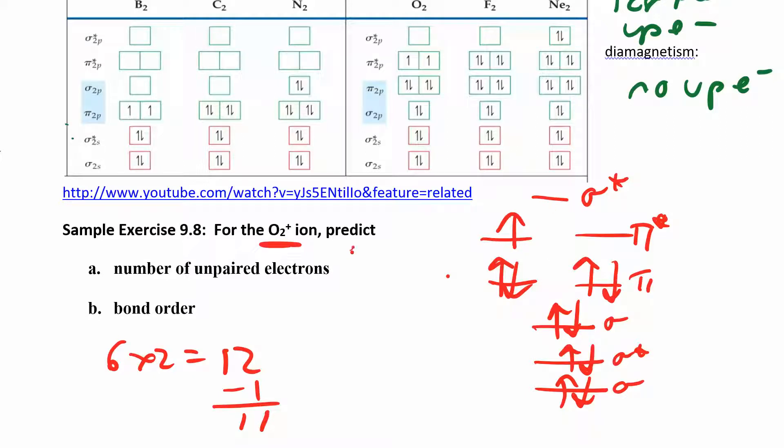What's the bond order? The bond order is one half of the bonding minus the antibonding, so the non-stars minus the stars. I have bonding orbitals: 2, 4, 6, 8. Minus antibonding: 1, 2, 3. Let me show you where the antibonding orbitals are—this is one, and then these guys. That's where the three came from.